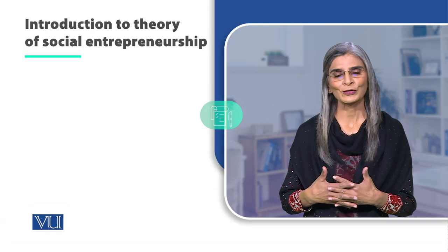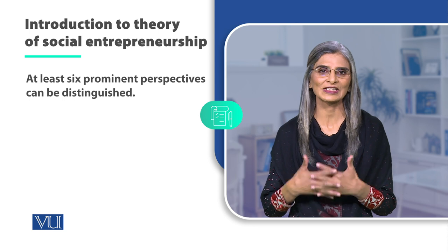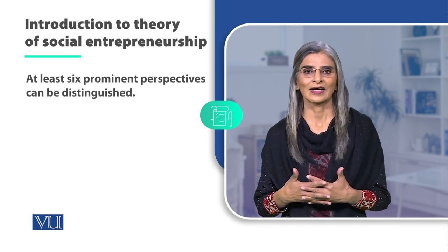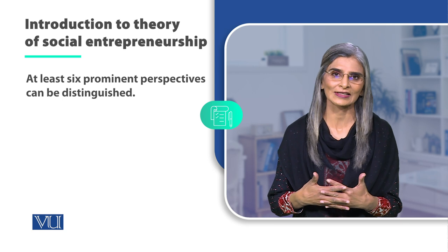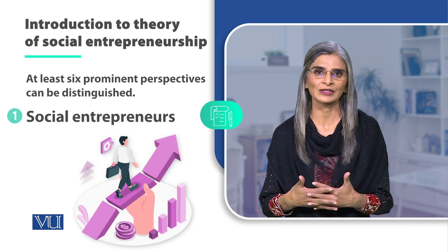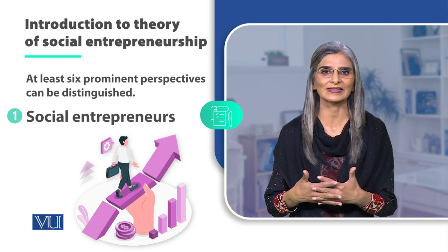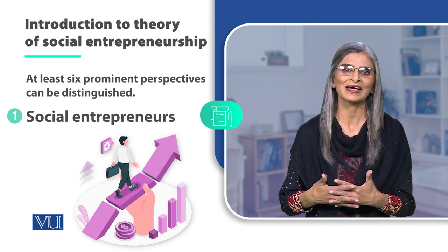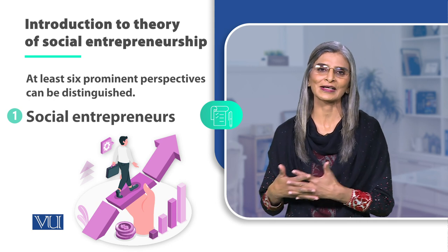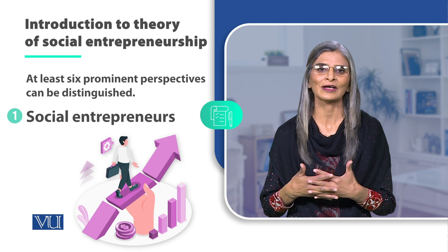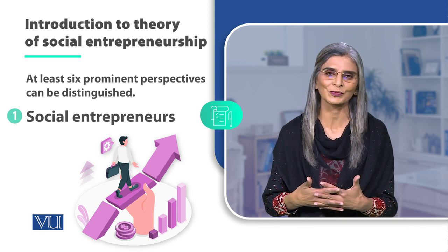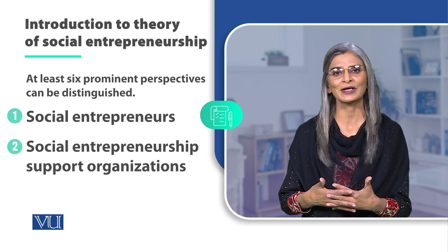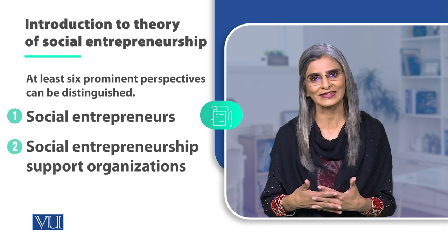Social entrepreneurship के हवाले से जो text लिखी गई हैं, जो material हमें मिलता है, उसके कम से कम 6 मुख्तलिफ sources हमें नजर आते हैं। सबसे पहले, social entrepreneurs खुद एक source हैं, social entrepreneurship के हवाले से writings का, text का। लेकिन ये एक rare source है क्योंकि social entrepreneurs busy हैं — they are basically doers — और वो लिखने का time कम निकालते हैं।